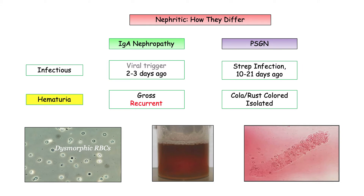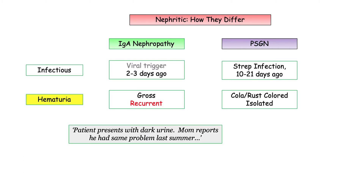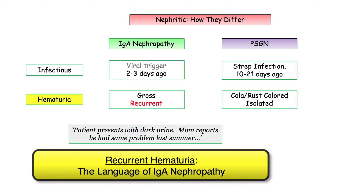Moving on to hematuria — this is another major distinguishing characteristic. The patient with IgA nephropathy is more likely to be described with overt episodes of gross hematuria, but the big ticket item is the recurrent nature of the hematuria. Compare that with post-streptococcal: these are isolated, generally self-limited episodes that complicate an acute infection. Here is how a classic vignette will play out: the patient presents with dark urine, the mom reports a similar episode last summer — boom, game, set, match. The kid has recurrent gross hematuria, and the question writer just informed you the diagnosis is IgA nephropathy.